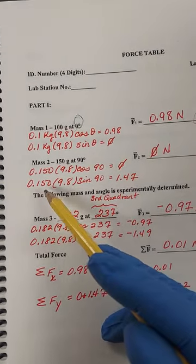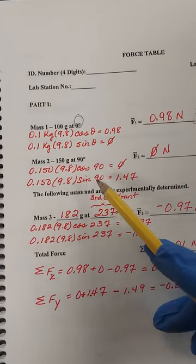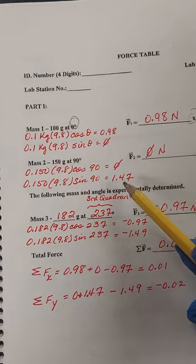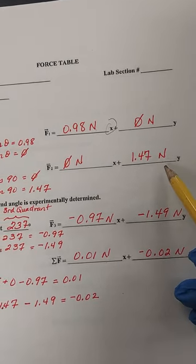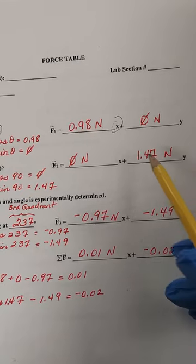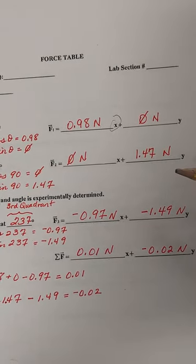And 0.150 kilograms times gravity, 9.8 times the sine of 90 degrees gives you 1.47 newtons, which you place here. So you have forces in the x direction and you have forces in the y direction.